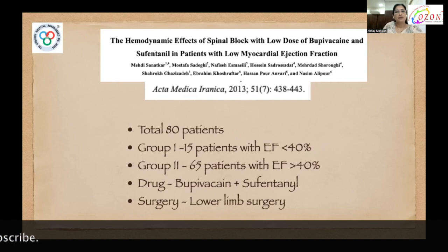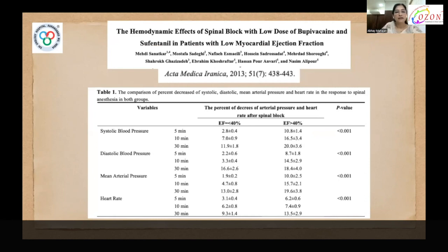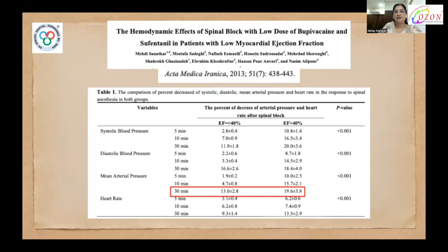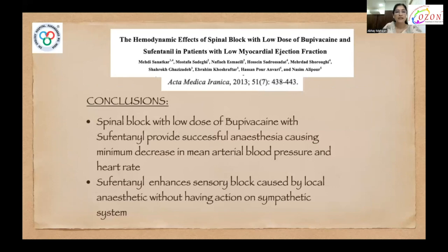A study of hemodynamic effects of spinal block with low-dose bupivacaine and sufentanil in patients with low ejection fraction studied 80 patients divided into two groups: Group 1 with 15 patients with ejection fraction less than 40%, and Group 2 with 55 patients with ejection fraction more than 40%. Surgery performed was lower limb surgery. Mean arterial pressure after 30 minutes decreased by 13% in Group 1 and 19% in Group 2. They concluded that spinal block with low-dose bupivacaine provides successful anesthesia causing minimal decrease in mean arterial pressure and heart rate, and fentanyl enhances sensory block without significant action on the sympathetic system.